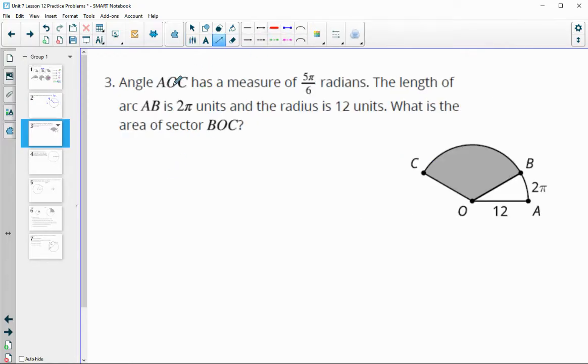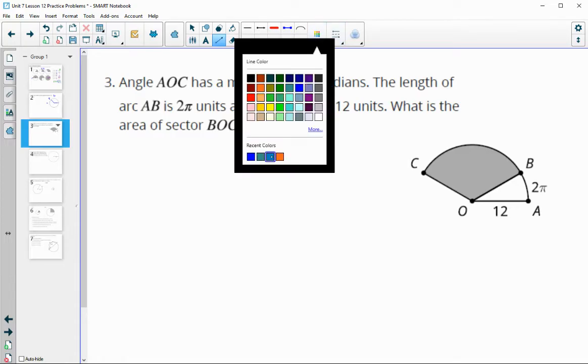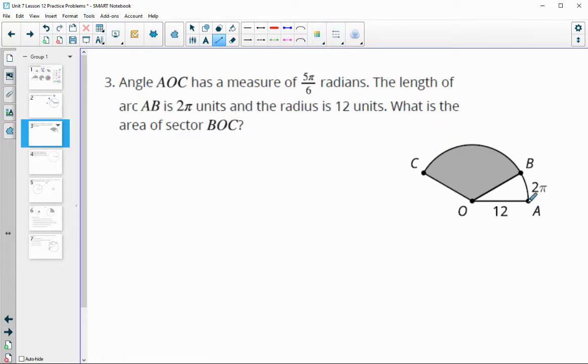In number three, angle AOC has a radian measure of 5 pi over 6. And then we have this arc AB, which is a 2 pi arc length with a 12 radius. We want to find the area of this shaded sector.